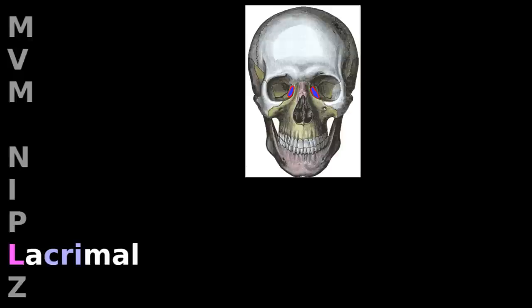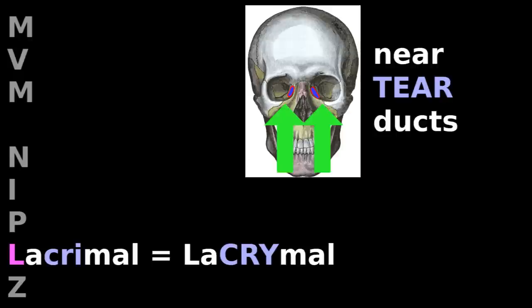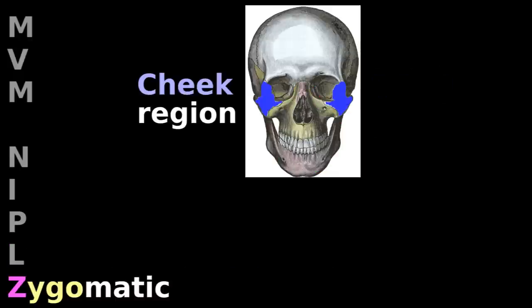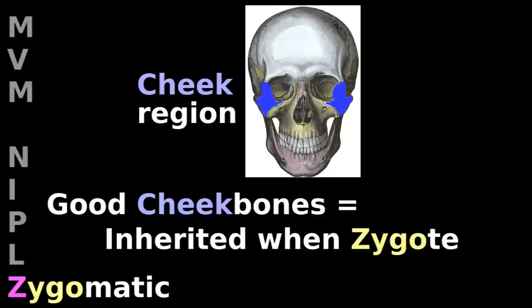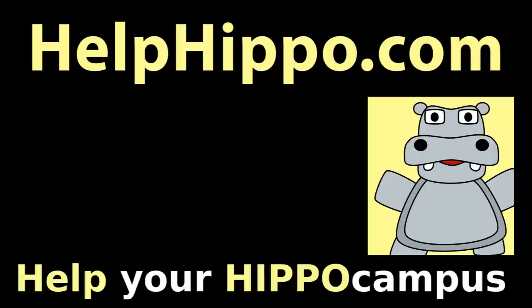The lacrimal bone is near the tear ducts. The zygomatic bone is in the cheek region. If you have photogenic cheekbones, you inherited that DNA when you were a zygote. The Help Hippo homepage has flashcards to quiz yourself on skull bones. Help Hippo, help your hippocampus.